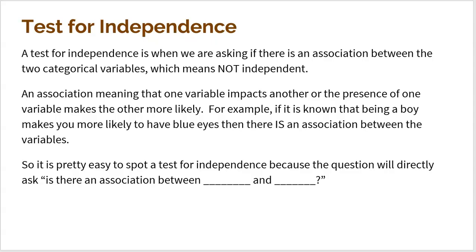A test for independence is when we ask if there is an association between two categorical variables — association meaning not independent. If there is an association, one variable's outcome affects the other. For example, if being a boy makes you more likely to have blue eyes, then there is an association because being a boy changed the likelihood. So if a question gives you a two-way table and asks whether there is an association between the two variables, you are clearly working with a test for independence.